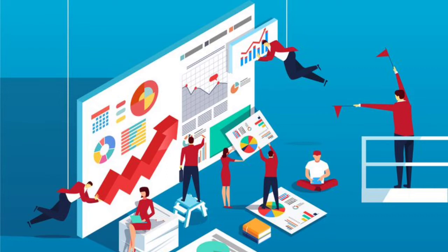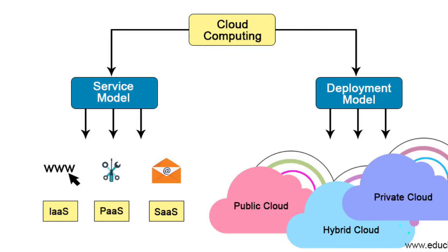So, the next thing we have to talk about is types of Cloud Computing. We have to talk about two categories: the first is the deployment model, and the next is the service model.